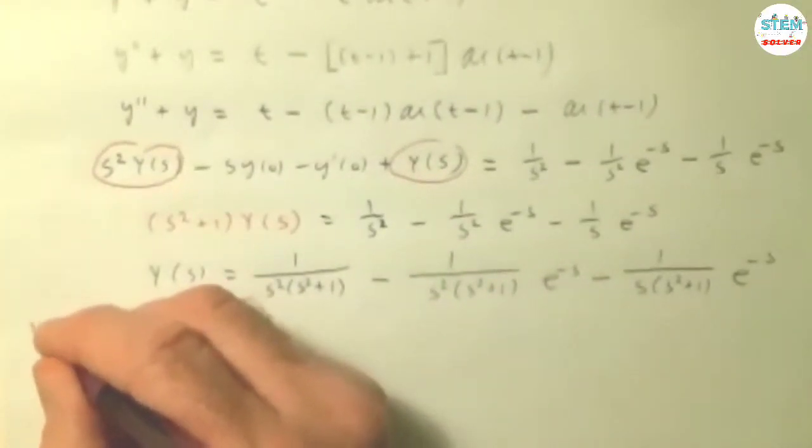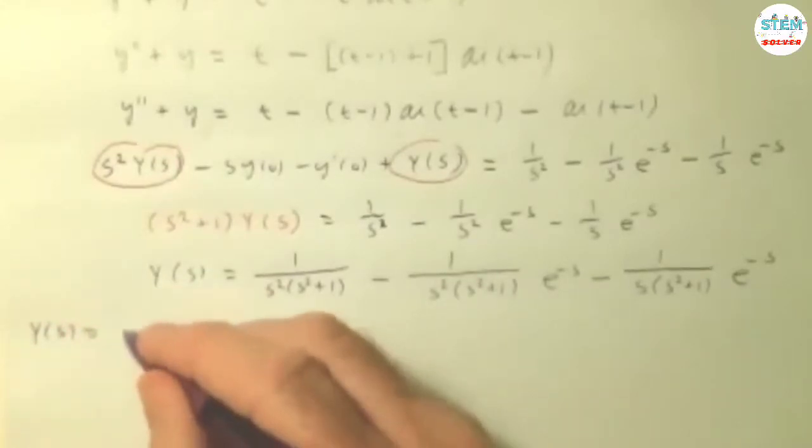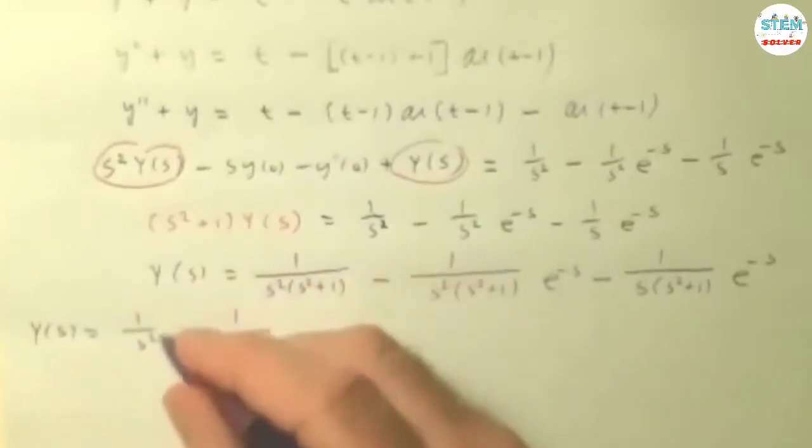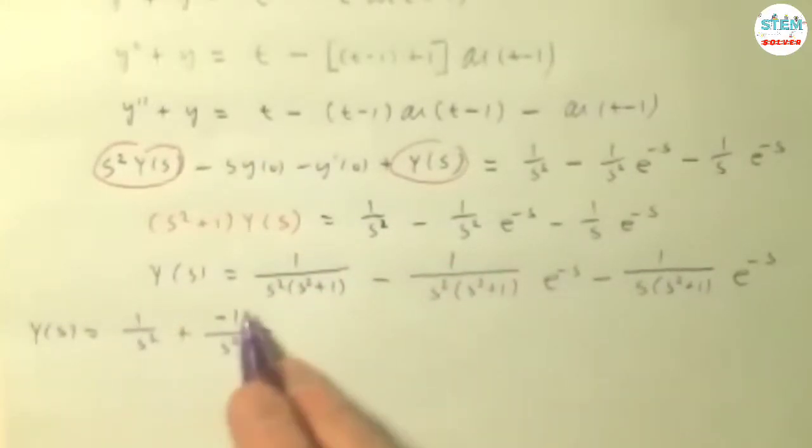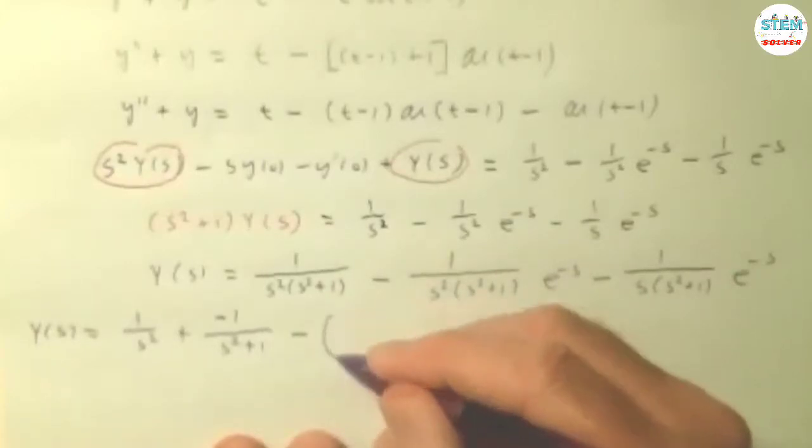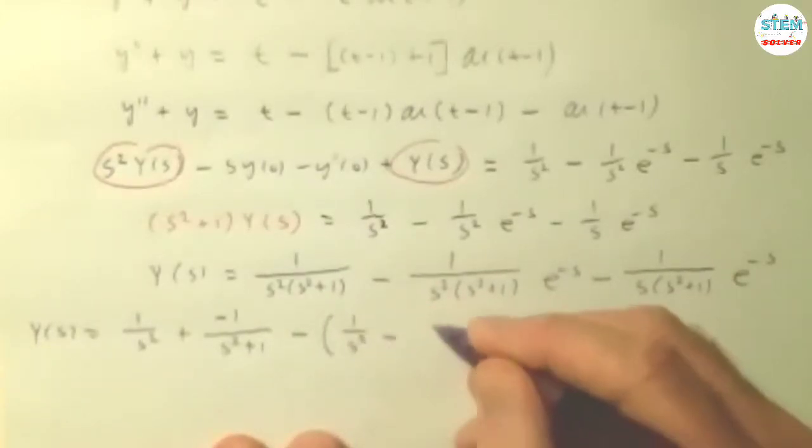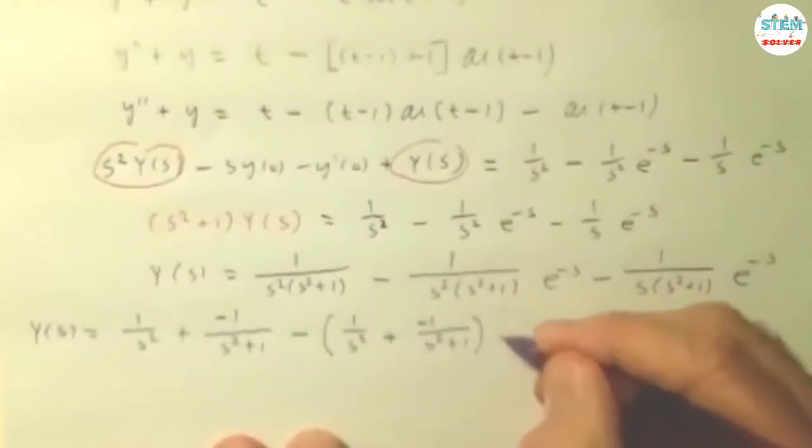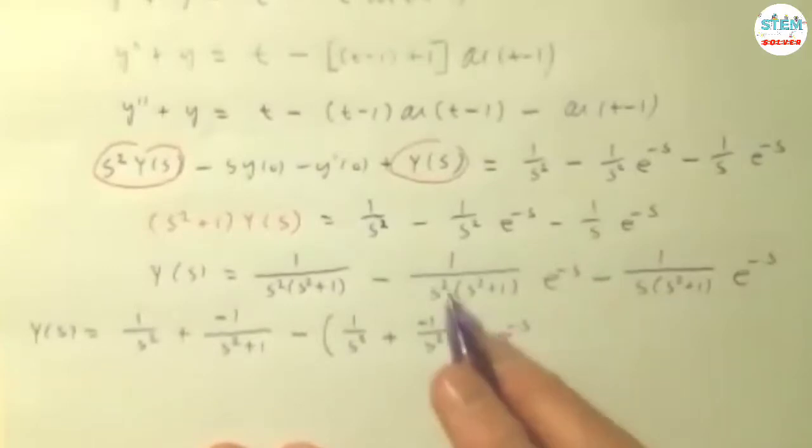So let's see. So y of s, this could be broken apart easily. This is s squared, this is s squared plus 1. It's going to have to be a 1 and 1. This is going to have to be negative. S squared plus 1 minus s squared gives you 1. What's nice about this, this is the same thing. I need a parenthesis here, but it's going to be 1 over s squared minus 1 over s squared plus 1, times e to the negative s.